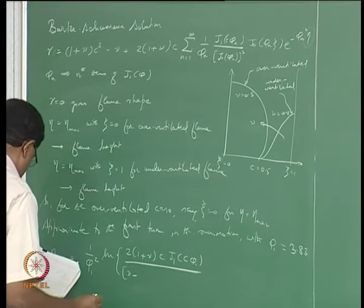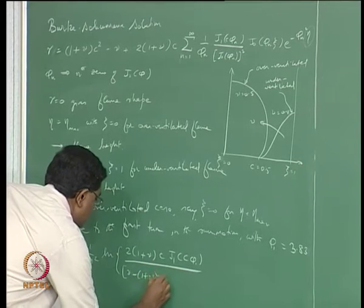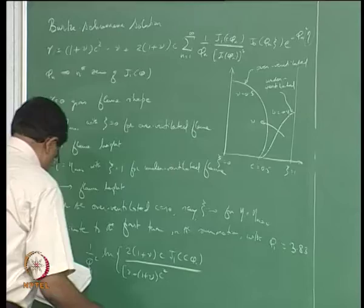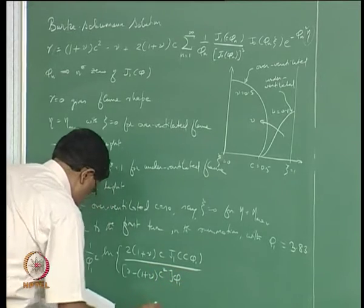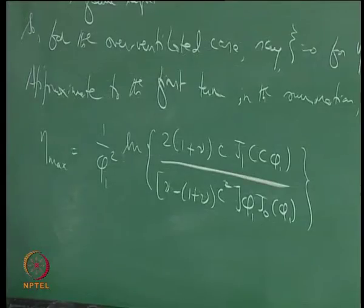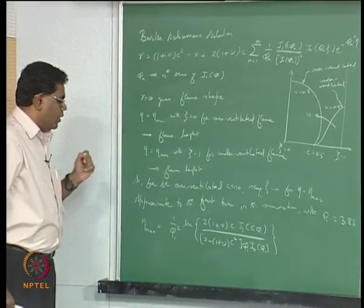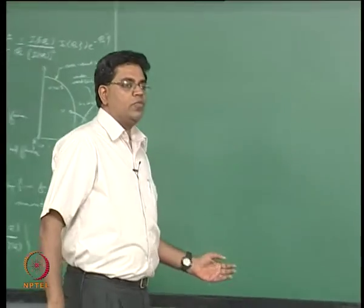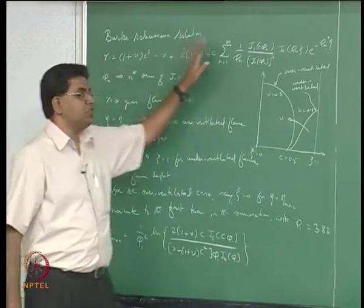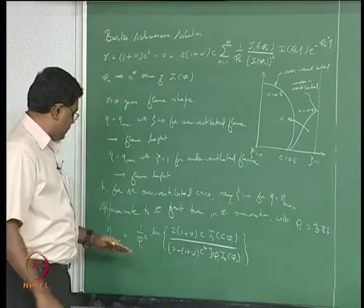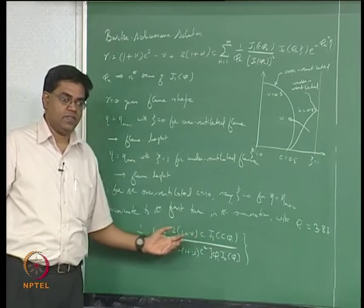Dividing through, you get the expression involving nu minus 1 plus nu times c squared and the factor phi_1 times g_0 of phi_1. This gives you a good idea of what the flame length should be, but what do we learn from it? It is difficult to see how the flame length depends on the problem parameters from this expression alone, and the flame shape is also difficult to interpret directly.